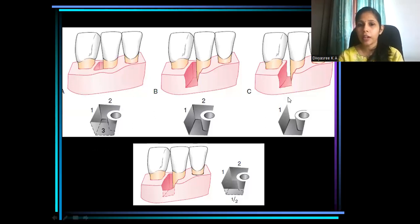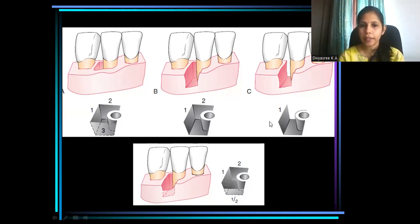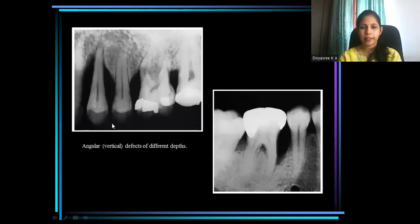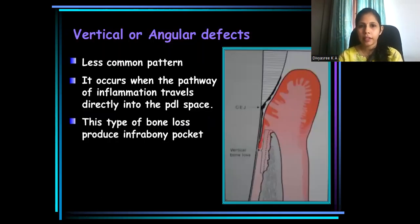Either they can have a single wall — called a single wall vertical defect — or they can have two walls, a two-wall vertical defect, or they can have three walls — a three-wall vertical or angular defect. This is how an angular defect or vertical bony defect appears under a radiograph.